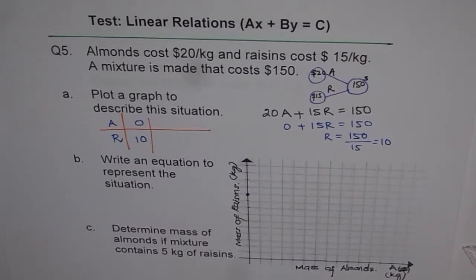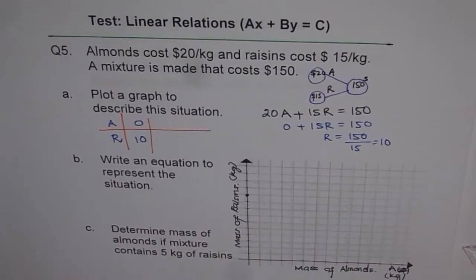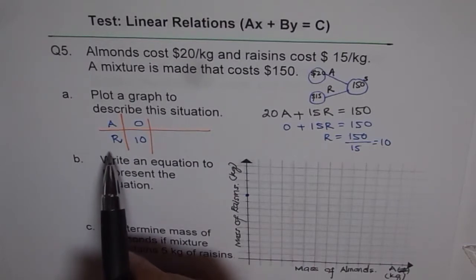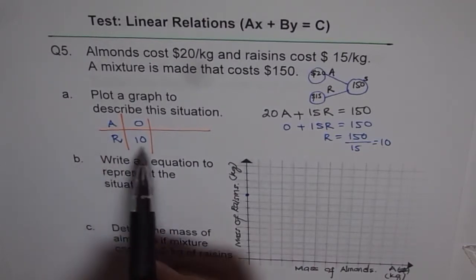Now here in this graph, Y intercept is telling us that if the mixture contains only raisins, then how much raisins are there. Now we can do a similar calculation and see what happens to A if R is 0.